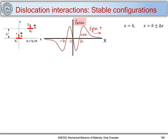When I perturb this dislocation by minus delta x, the glide force is negative, and thus it will make this dislocation move in the negative direction, away from h toward zero. So when I perturb a dislocation at x equal to h by plus or minus delta x, I can see that this position h is not stable — the dislocation moves away from it in both cases.